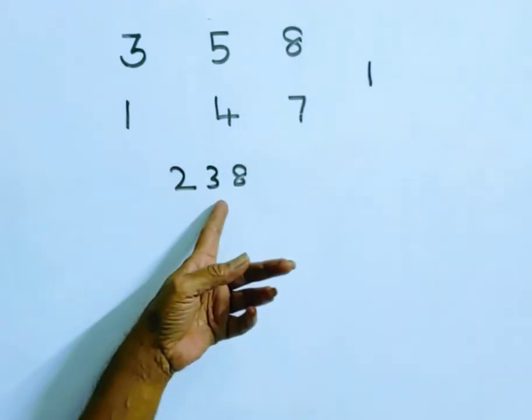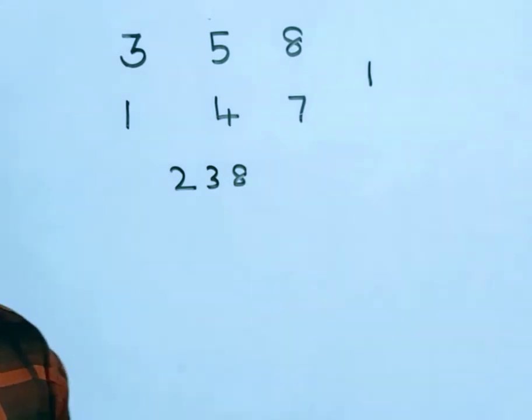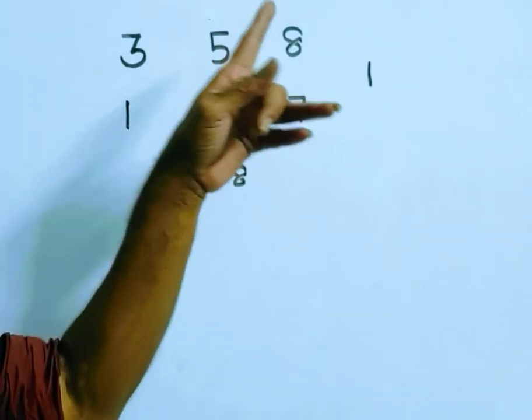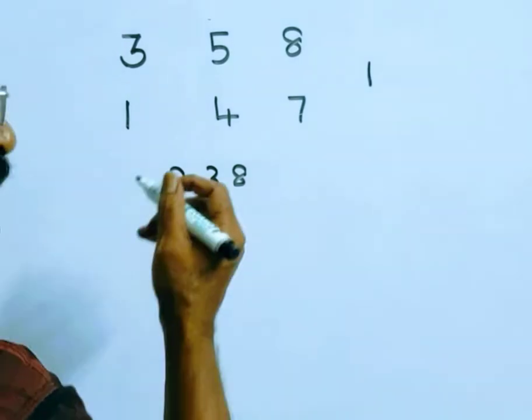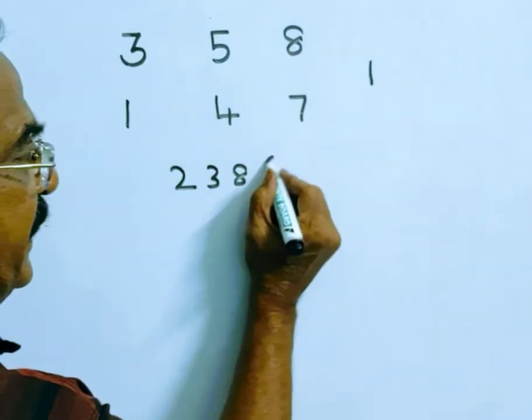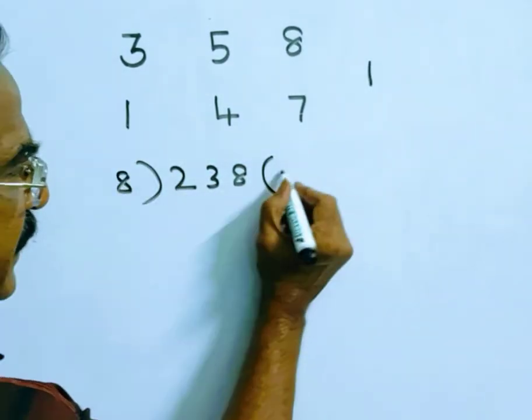That means this number must be successively divided in the order of 8, 5, 3. So friends, first let us divide this number by 8 and see what is the remainder.